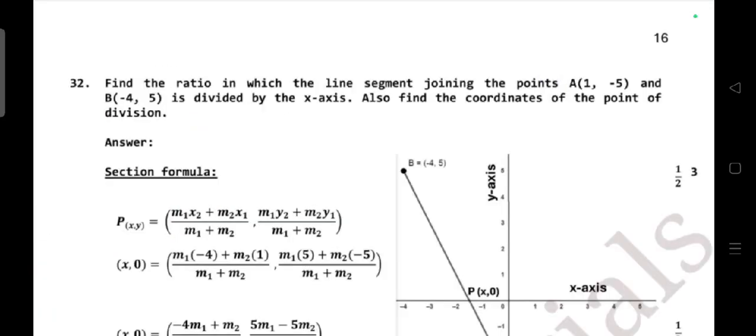Question number 32: find the ratio in which the line segment joining the points A(1,-5) and B(-4,5) is divided by the x-axis. Also find the coordinates of the point of division.